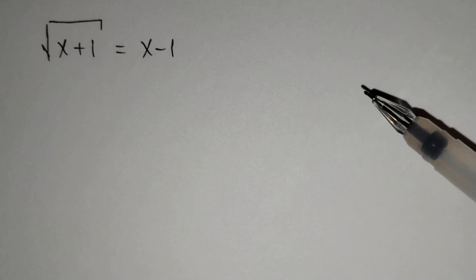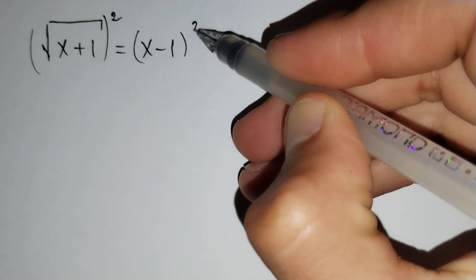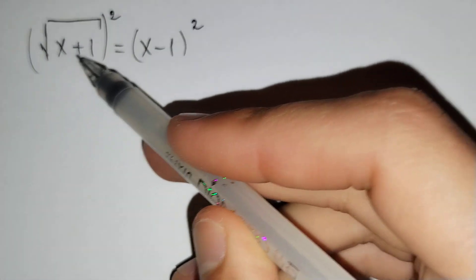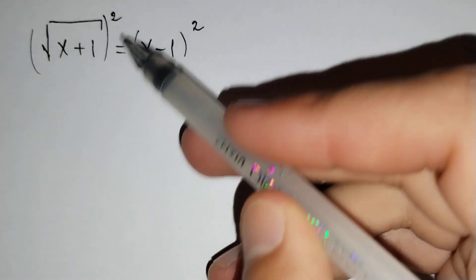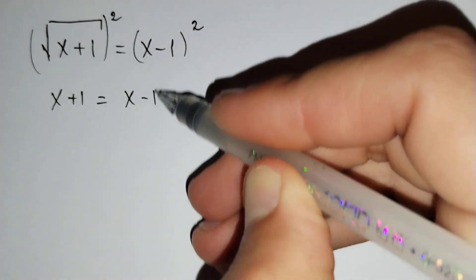Firstly, if we raise both sides to the second degree, the square root of x plus 1 power 2 equals x plus 1 and equals x minus 1 squared.